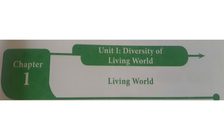Thus non-living and living things exist together to make our planet unique. According to a survey made by Mora et al., they estimated 8.7 million species are found on this Earth. The living world includes microbes, plants, animals and human beings.